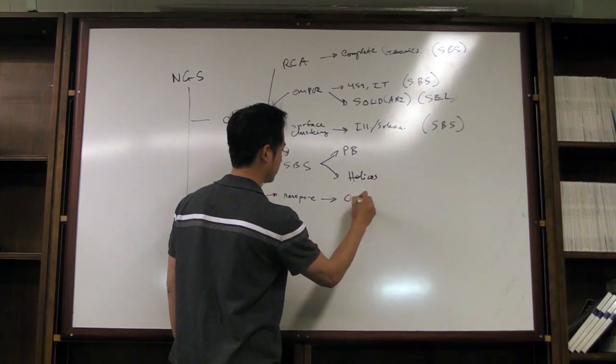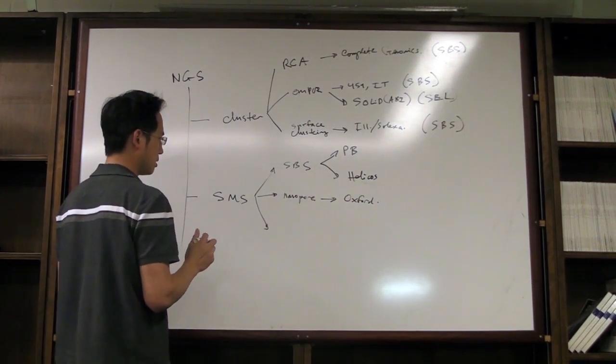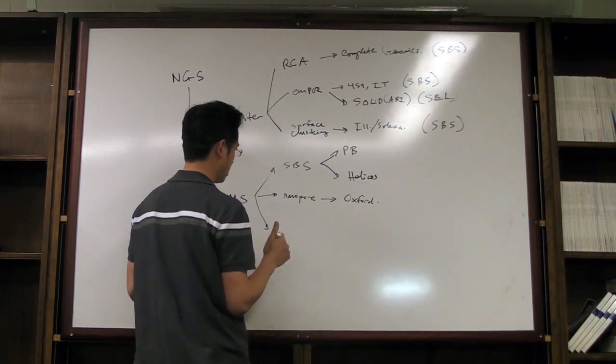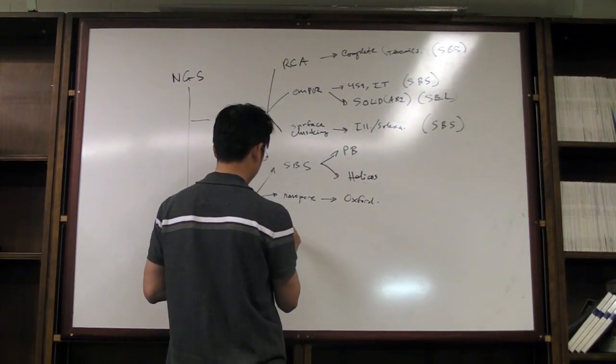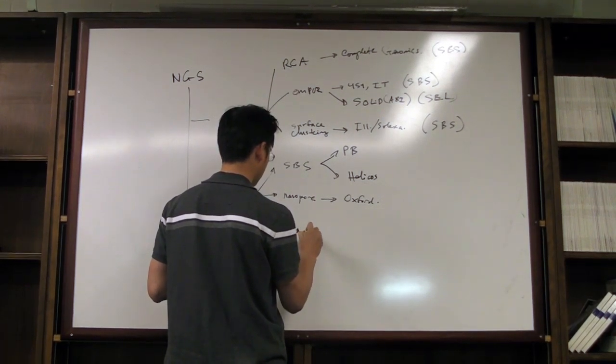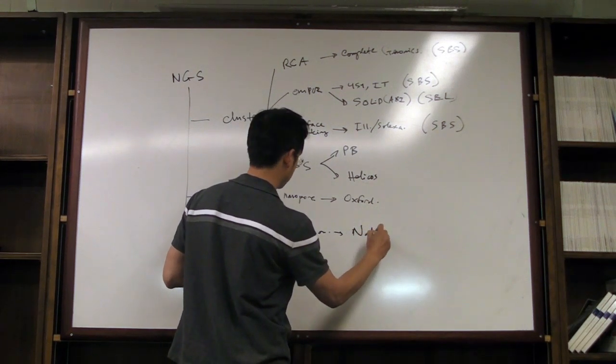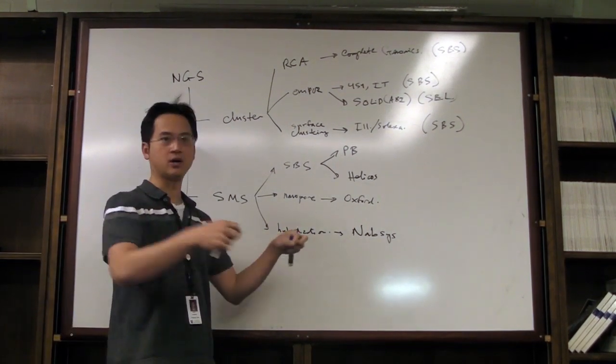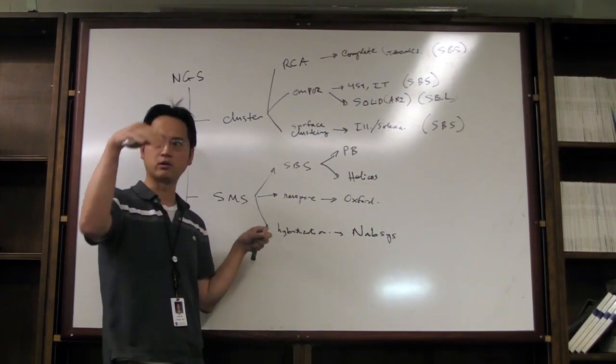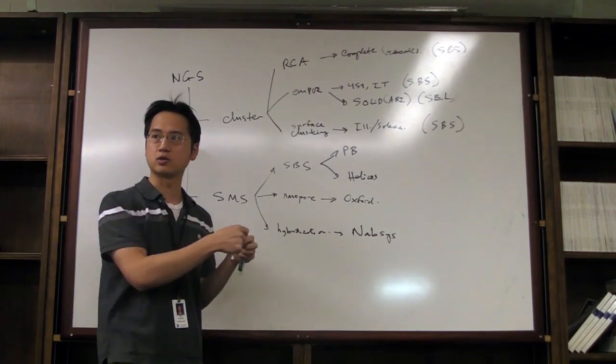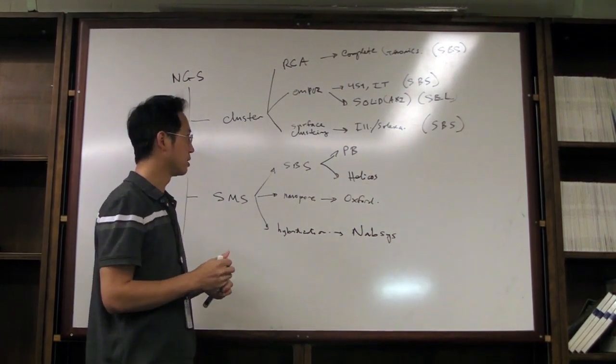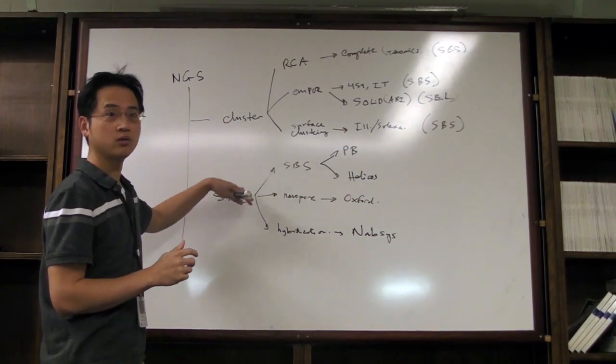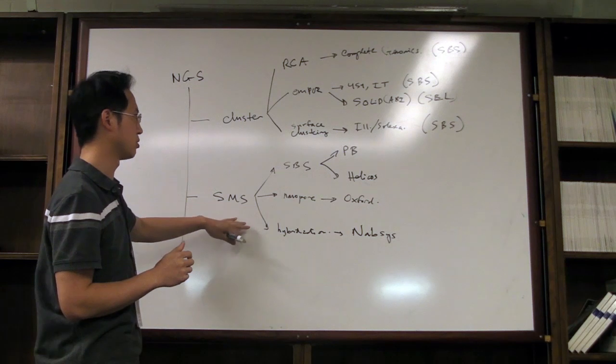Then you have those where it's nanopore-based, and the only one right now is Oxford Nanotechnology. There's something on the horizon which is a little bit newer, and that is by hybridization. This company is called NABsys. I didn't really get too much into here, but this is a company that can stretch out a piece of DNA very long. They can hybridize different colored oligos to it, and by just doing a flow-based method, they can actually sequence that molecule.